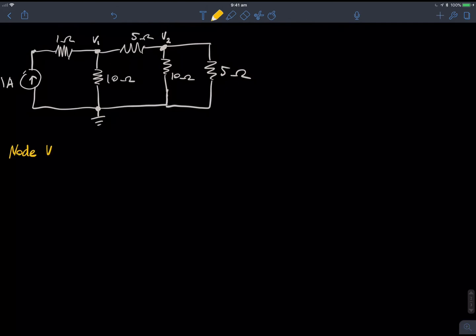So, at node V1, the current coming on the left side here is actually just negative one amps, because you can see the difference here is that we have a current source. We know the current source is in the opposite direction to the current outwards of the node, so we're going to say it's negative one amp.